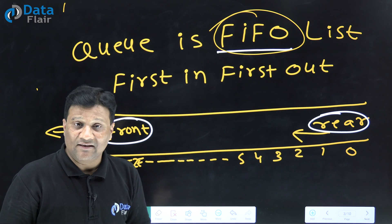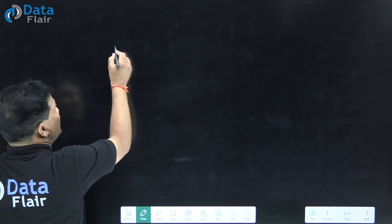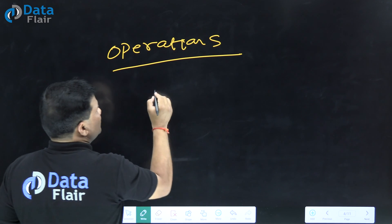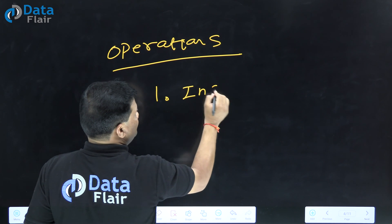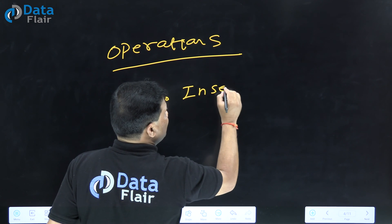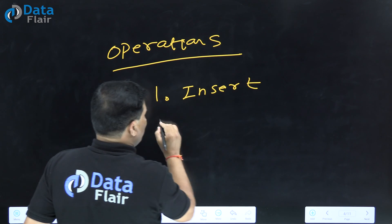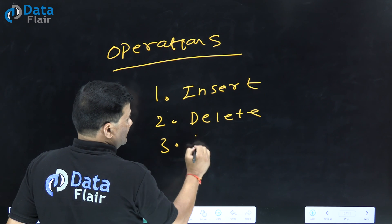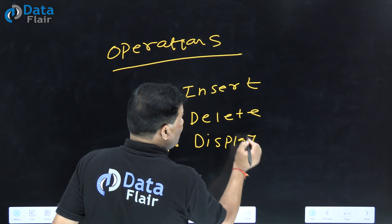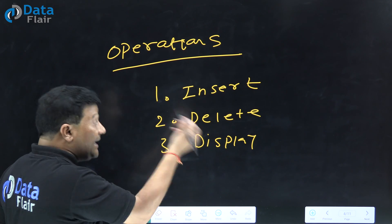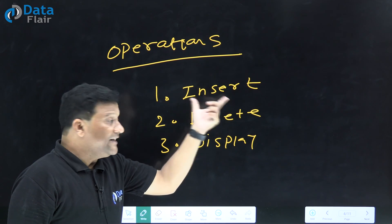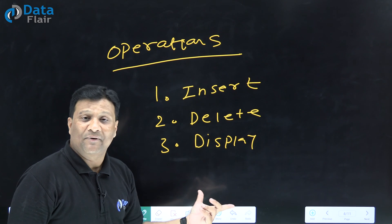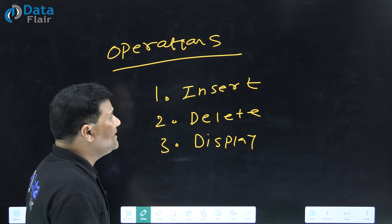The operations on Queue - mainly three operations we perform. First operation is insert, second operation is delete, and third operation is display. When we insert elements in Queue, that is called insert operation. When we remove elements from Queue, that is called delete operation. And when we view elements in Queue, that is called display operation.